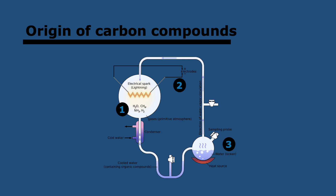We said that in the prebiotic period, carbon compounds would have arisen because of lightning and UV — but how is this known? Evidence came from the Miller-Urey experiment. They simulated a prebiotic atmosphere in a flask containing methane, hydrogen, ammonia, and water vapor, along with electrodes that could produce electrical discharges simulating lightning. The system circulated constantly as it would in a real atmosphere. After a couple of days, compounds formed that are very similar to those found in living beings — for example, more than 20 amino acids. This proved that with these conditions, carbon compounds could have appeared spontaneously.